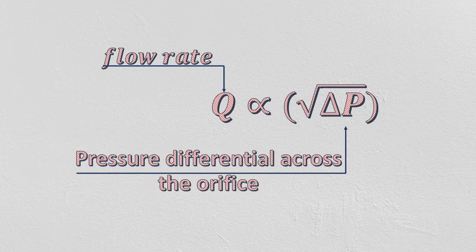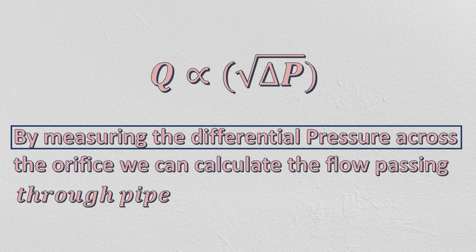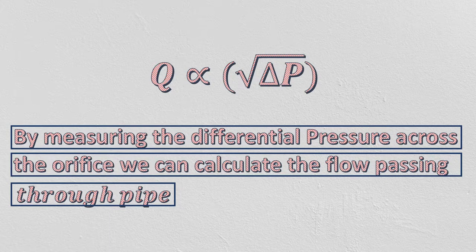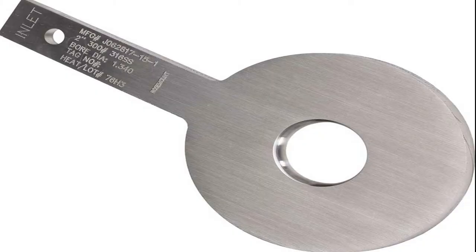So by measuring the differential pressure, we can calculate the flow in a pipe. This is why orifice type flow meters are widely used to measure the flow.